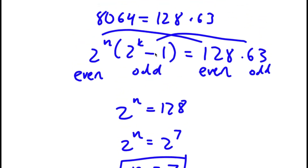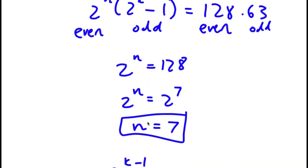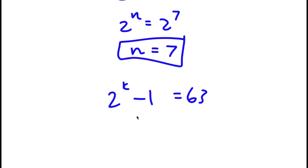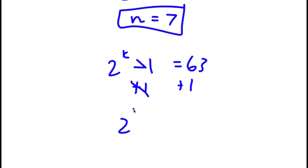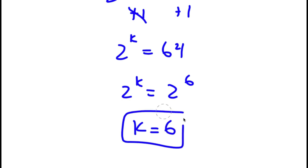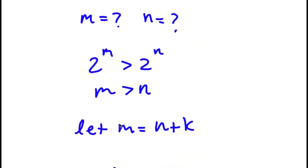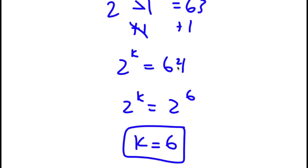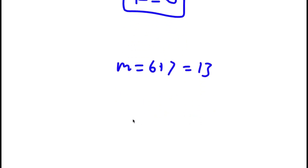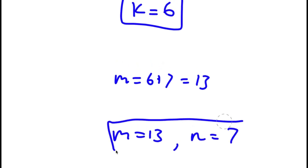Now for 2 to the power of k minus 1 equals 63, I add 1 to both sides to get 2 to the power of k equals 64. Since 64 equals 2 to the power of 6, k equals 6. Now, since m equals n plus k, and n is 7 and k is 6, m equals 6 plus 7 which is 13. So m equals 13 and n equals 7 are my solutions.